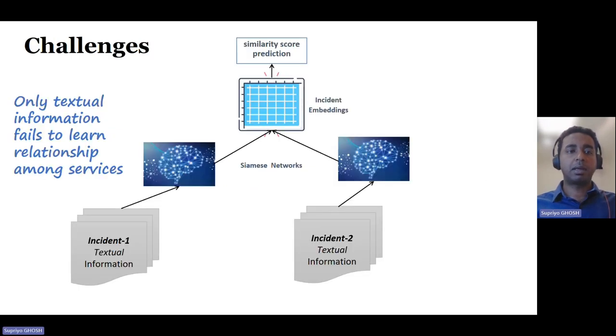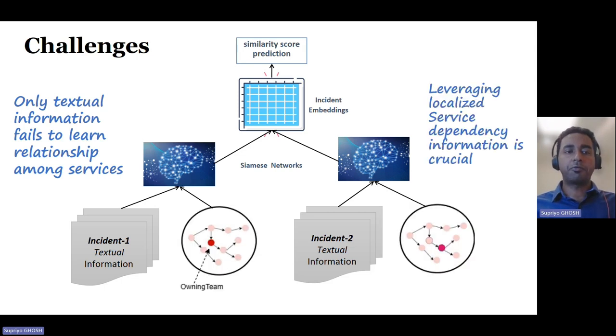Existing incident linking models usually leverage textual and contextual information of incidents to compute the similarity score, which performs poorly when the incidents emerge from different services or workloads. Therefore, we propose to encapsulate localized service dependency graph information into the model for improving the accuracy of incident links.